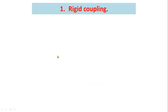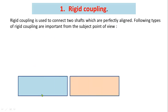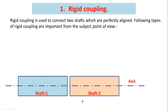Rigid couplings are used to connect two shafts which are perfectly aligned — you have to underline the words 'perfectly aligned.' Perfect alignment means shaft one and shaft two are having the same axis; both axes are collinear, meaning both axes coincide with each other. This type of alignment is called perfect alignment, and for this type of connection we use rigid couplings.